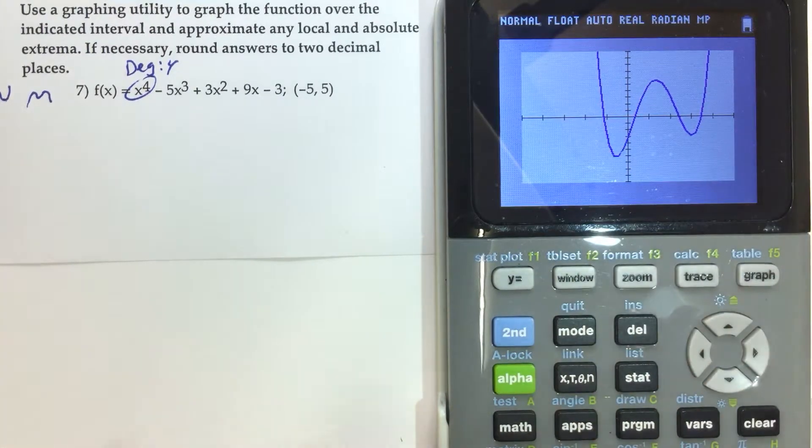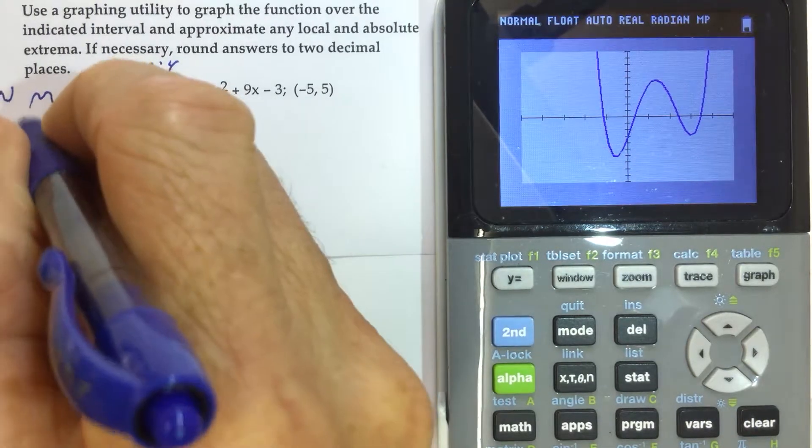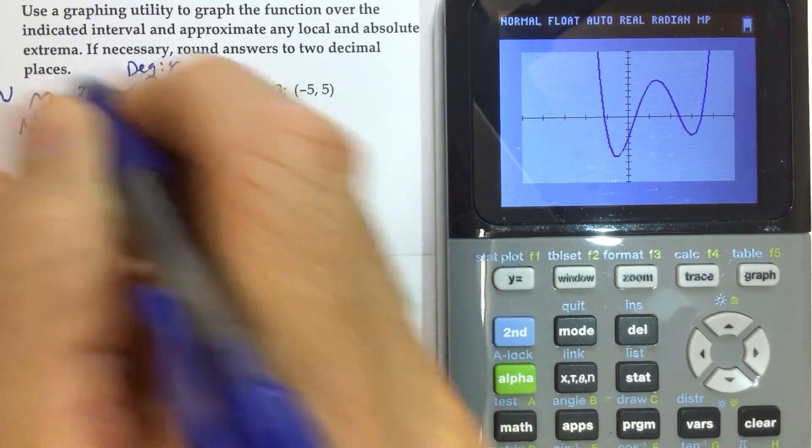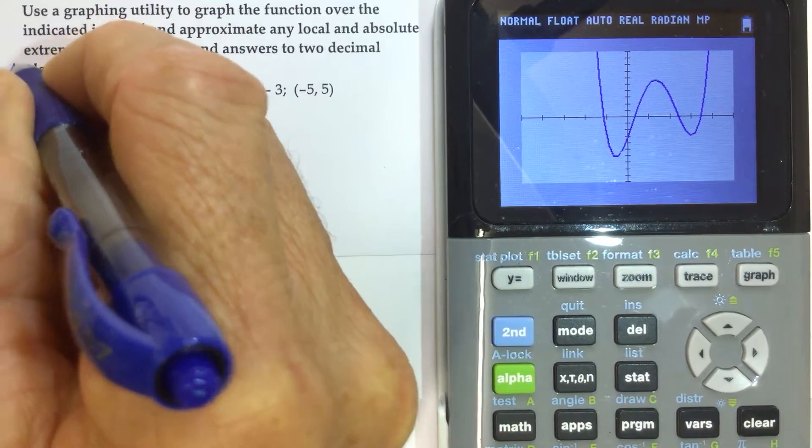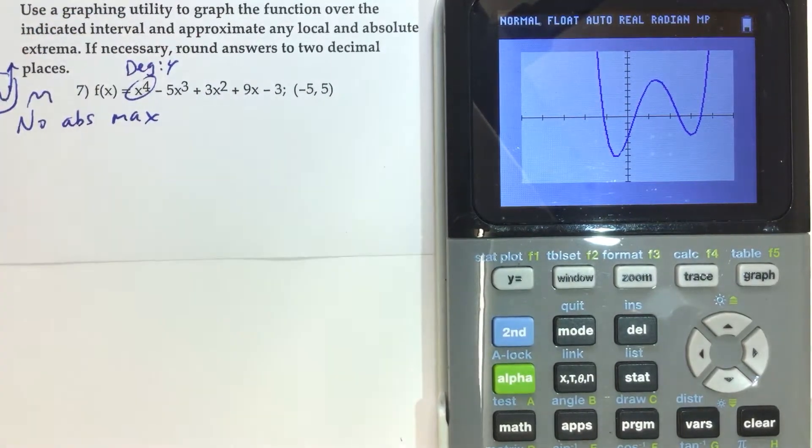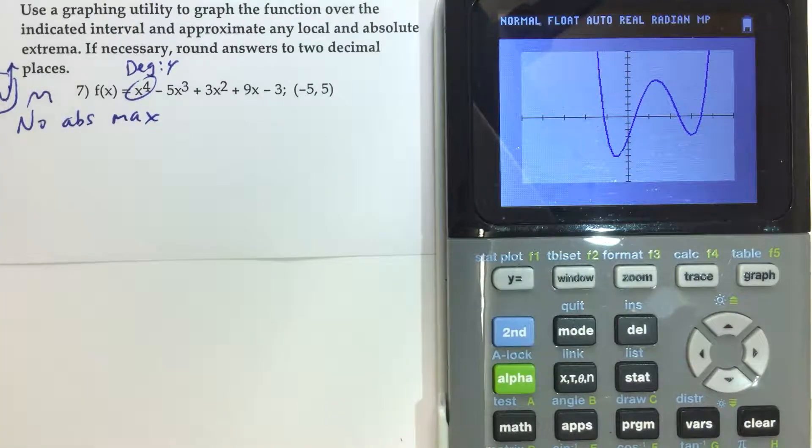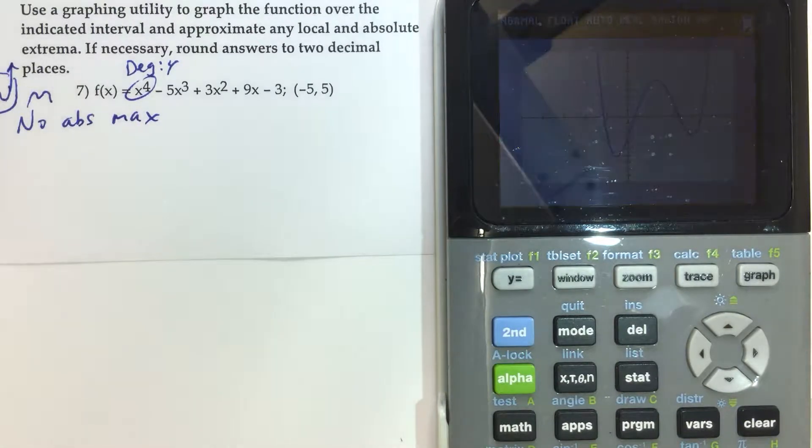So here we have negative 5 to 5. We're supposed to identify any local and absolute mins and maxes. Well, hopefully it's clear to you that there's no absolute max, because the graph will look like this, and it'll keep going forever up, and so there's no absolute max. But the absolute min, let's find that first.